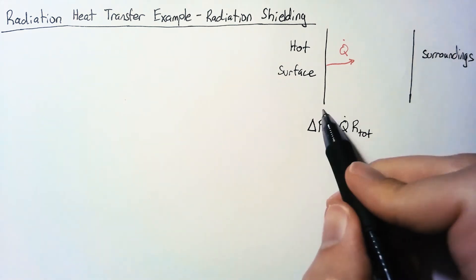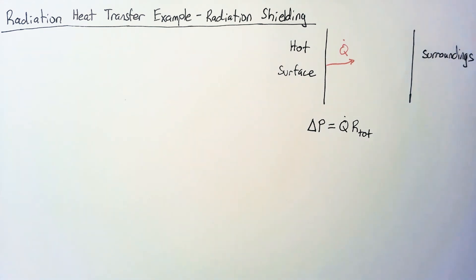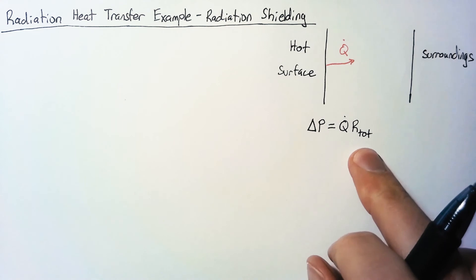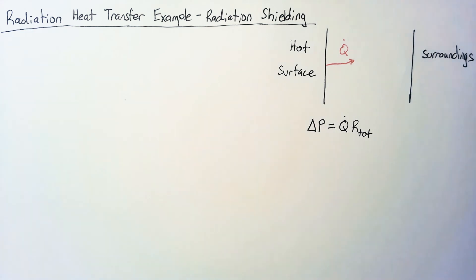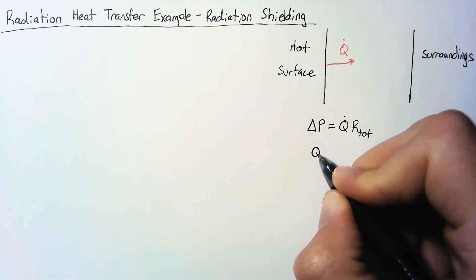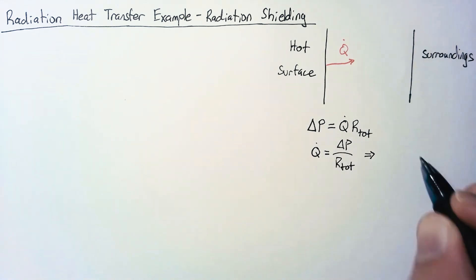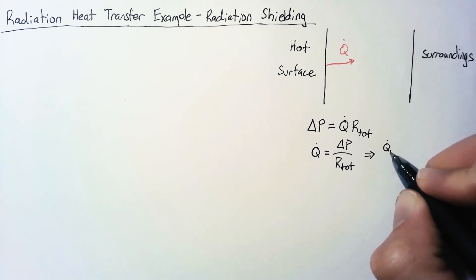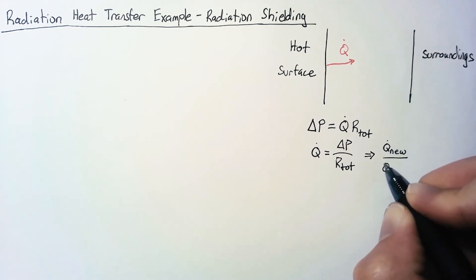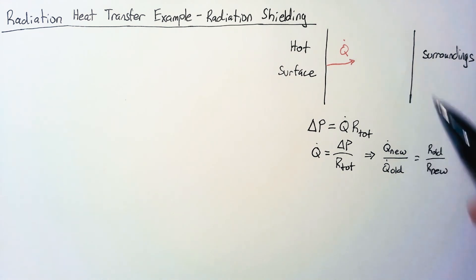For this problem, the temperature of our surface is not going to change, and neither are the temperatures of the surroundings. So this is set in stone. We're going to be changing our R-total in order to change our q-dot. So it's more helpful to say that q-dot equals delta-P over R-total, and that our new q-dot divided by our old q-dot equals our old resistance divided by our new resistance. All we need to do is figure out how our resistances change and then invert that ratio.